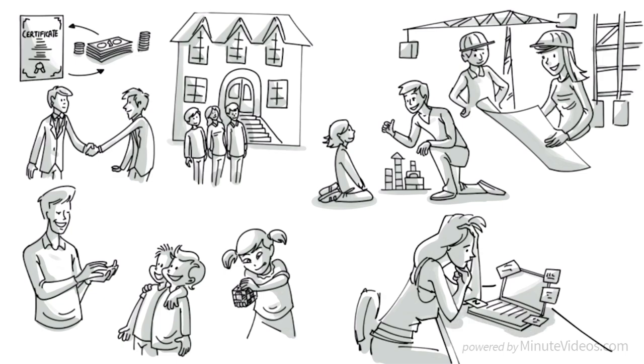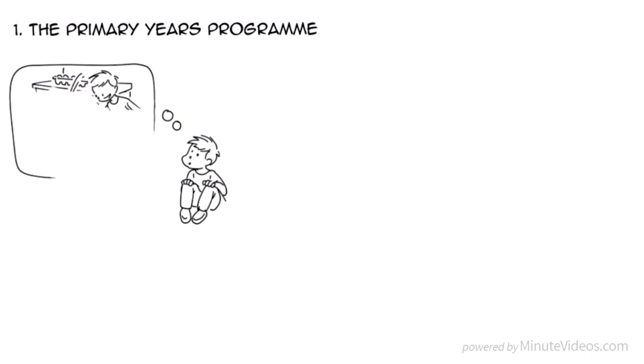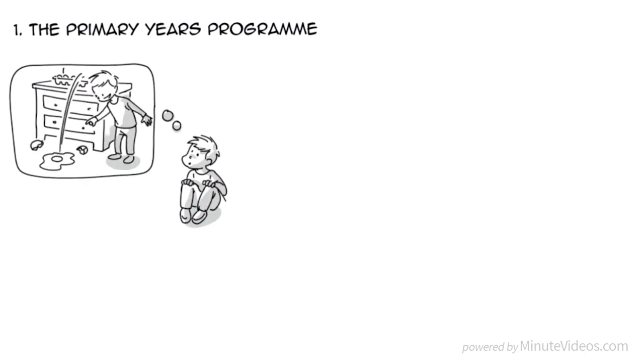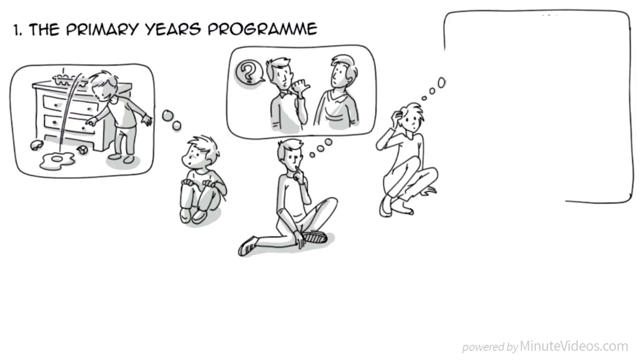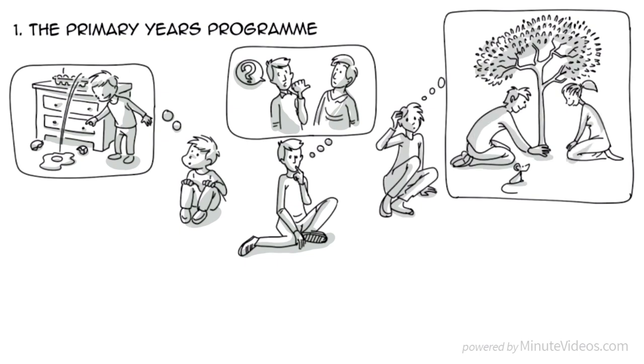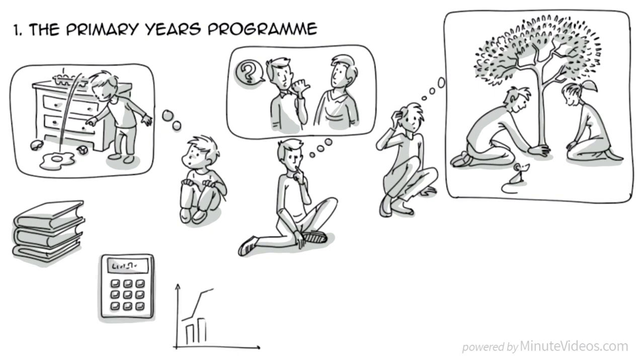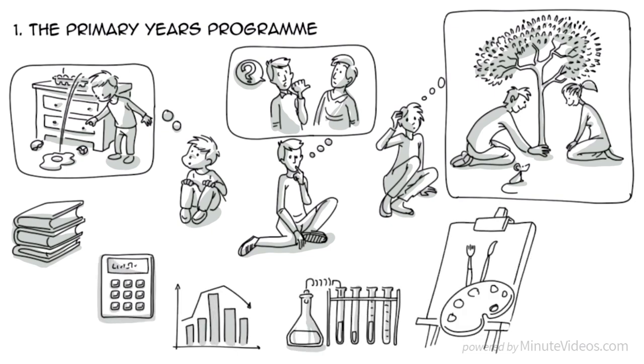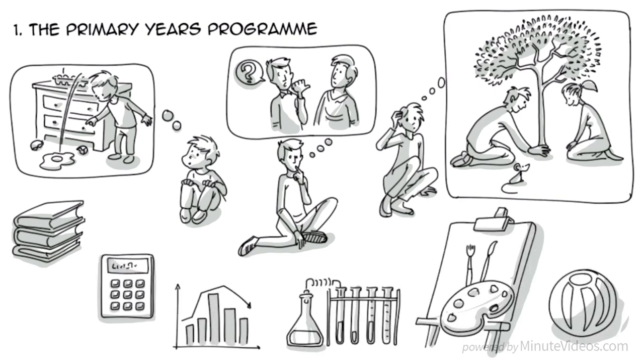Currently, there are four different programs. 1. The Primary Years Programme. This is for kids between 3 to 12, and is designed to encourage the children to ask some of life's big questions. How does the world work? Who am I? How can we build a sustainable society? In addition, there are six classic subject areas, such as language, maths, social studies, science, art and physical exercise.